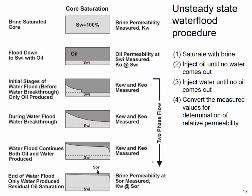Let's look at how to measure the relative permeability. There is an unsteady state method and a steady state method. In the unsteady state method, first you saturate the rock core with brine — during this you can measure the absolute permeability, the brine permeability KW. Then you inject oil and flow down to the irreducible water saturation, and at that point you measure the oil permeability, which becomes the baseline permeability.